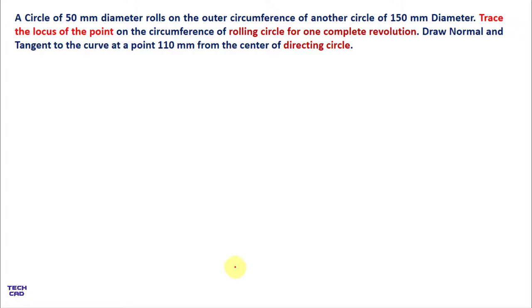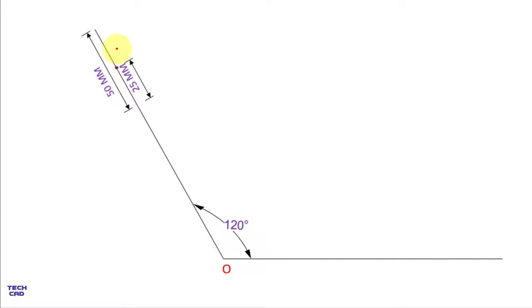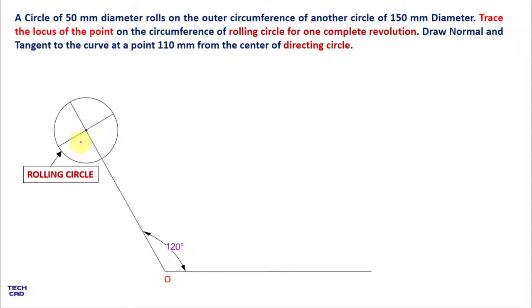Make a point, and from this point make a horizontal line and a line of 75 mm at an angle of 120 degrees, as we already found. After that, extend this line further up to 50 mm, which is the diameter of the rolling circle, and mark a point at the distance of 25 mm which is the radius. Make a circle which shows the rolling circle. Now divide this circle into 12 equal parts.